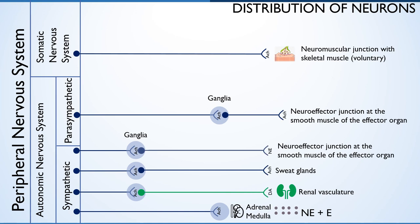The ganglia between pre- and postganglionic parasympathetic neurons is called parasympathetic ganglia. And the ganglia between pre- and postsynaptic sympathetic neurons is called sympathetic ganglia.